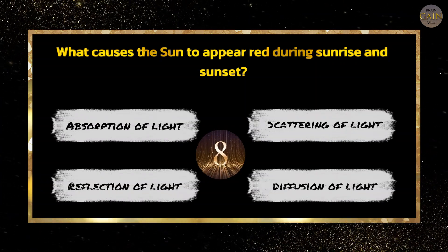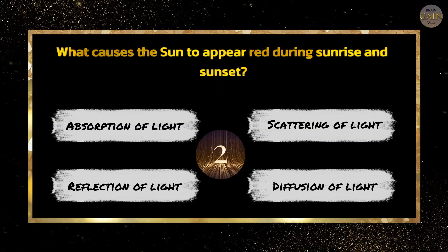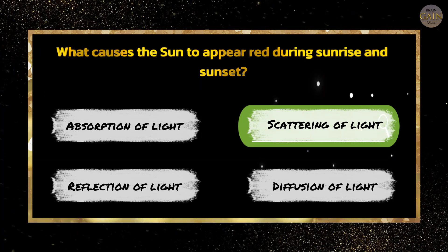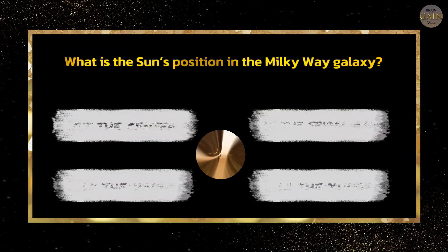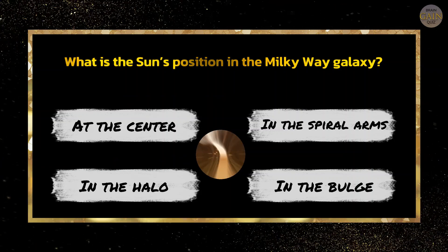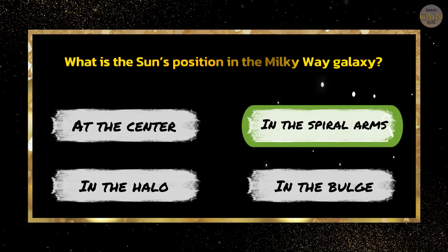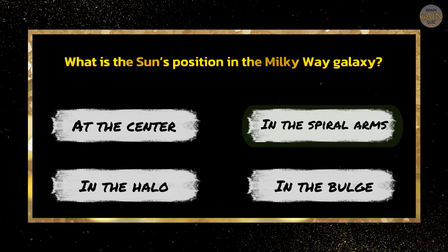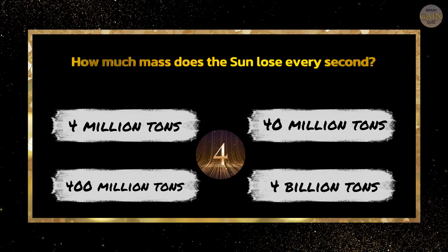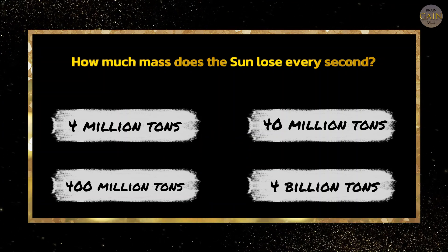What causes the Sun to appear red during sunrise and sunset? Scattering of light. What is the Sun's position in the Milky Way galaxy? In the spiral arms. How much mass does the Sun lose every second? 4 million tons.